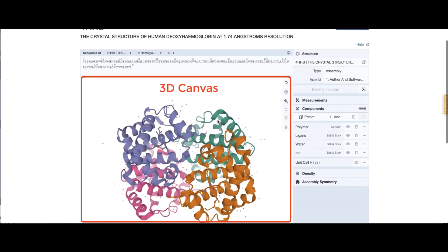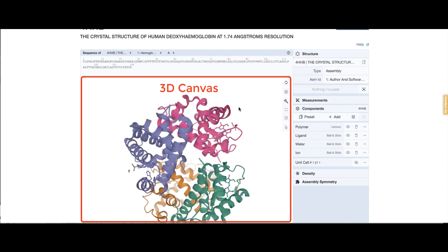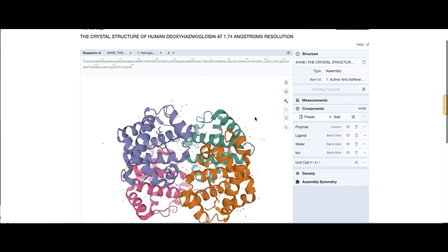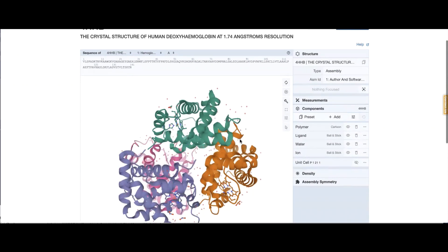This is your 3D canvas. I can just use the mouse in the 3D canvas to move things around. You can see four protein chains shown here in four different colors.